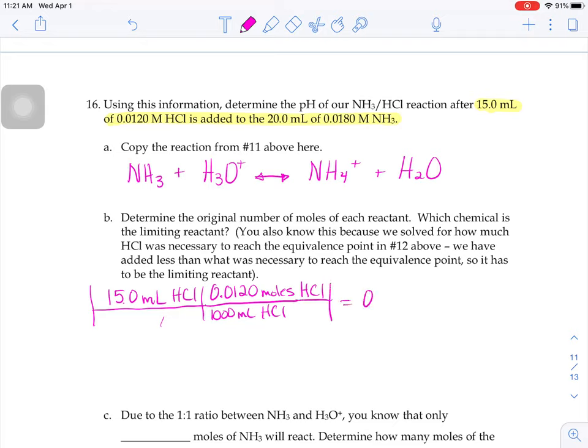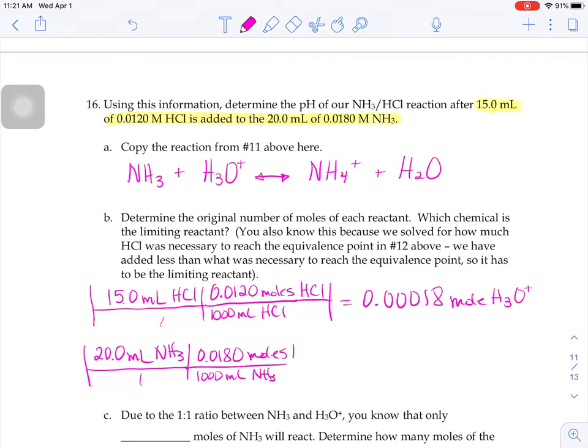We have 0.00018 moles worth of H3O+. At this point in our titration, there's 20 milliliters of that ammonia in the flask. And for every 1000 milliliters of that ammonia, there's 0.0180 moles. So we have 0.00036 moles worth of NH3.